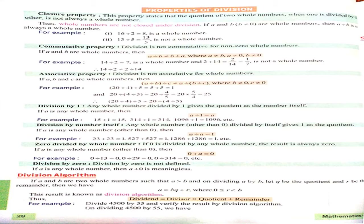Now next, division algorithm: if A and B are two whole numbers such that A is greater than B, and on dividing A by B, let Q be the quotient and R be the remainder, then we have A = B × Q + R. This result is known as the division algorithm.